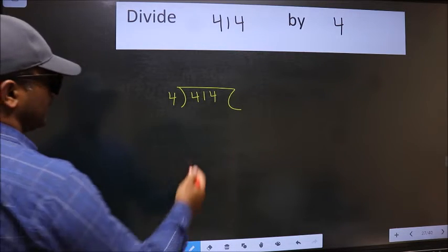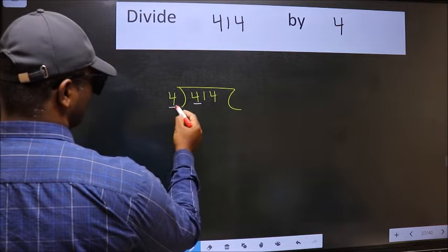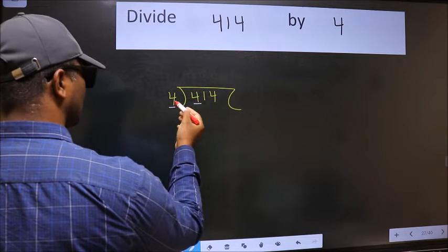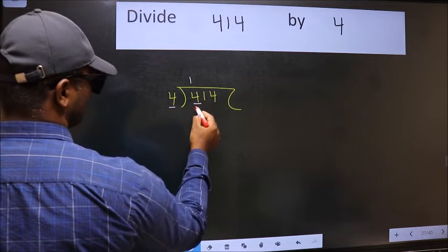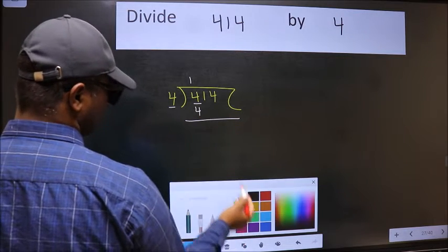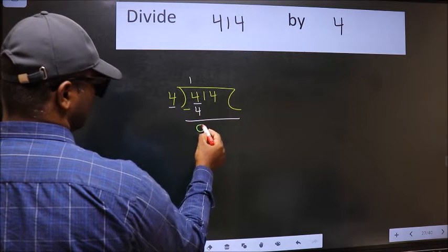Next, here we have 4, and here also 4. When do we get 4 in the 4 table? 4 once is 4. Now we should subtract. We get 0.